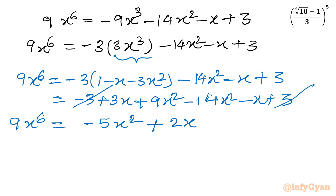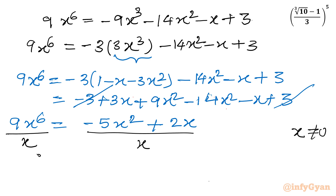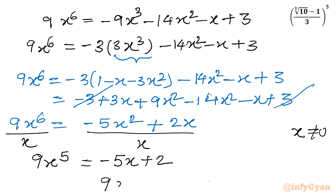Now I can divide this equation by x — of course x is non-zero. So dividing both sides by x: the left hand side becomes 9x power 5. On the right hand side: minus 5x plus 2. So we can write 9x power 5 equal to 2 minus 5x. Let's put the value of x — x was the bracket cube root(10) minus 1 over 3. Taking LCM: 6 minus 5 cube root(10) plus 5 all divided by the common denominator 3. This comes out as 11 minus 5 times cube root 10, divided by 3.